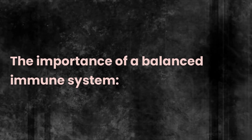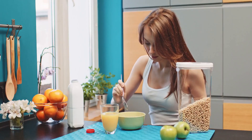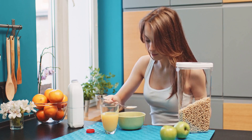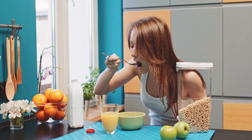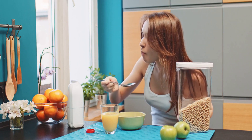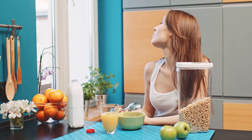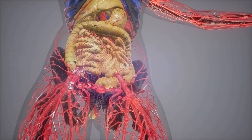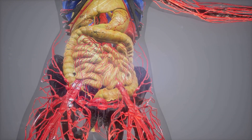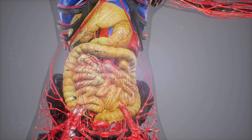A balanced immune system is also important for optimal health. A balanced immune system is achieved through a complex interplay between the gut microbiota, immune cells, and other body systems.